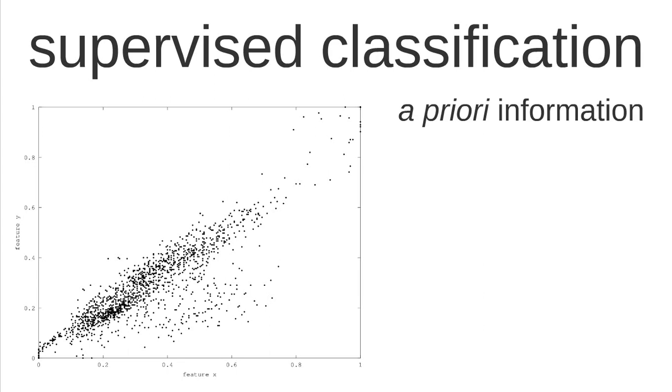When we talk about supervised classification, we talk about a priori information. This means that we have certain knowledge about this graph here. We know the instances. We know the classes to which some of the instances belong.